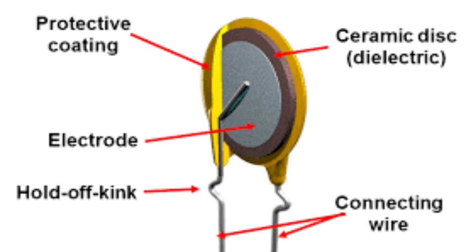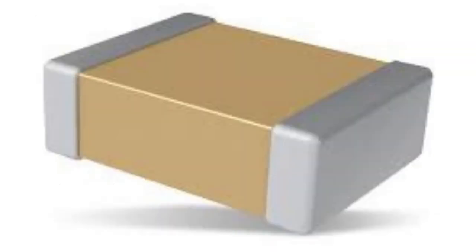Ceramic capacitors can be polarized or non-polarized. Polarized ceramic capacitors have a positive and negative terminal and must be connected with the correct orientation in the circuit. Non-polarized ceramic capacitors do not have a positive or negative terminal and can be connected in either direction. There are several classes: class 1 ceramic capacitors are the highest quality with the lowest tolerance and best stability, class 2 have higher tolerance and lower stability, while class 3 have the highest tolerance and lowest stability.